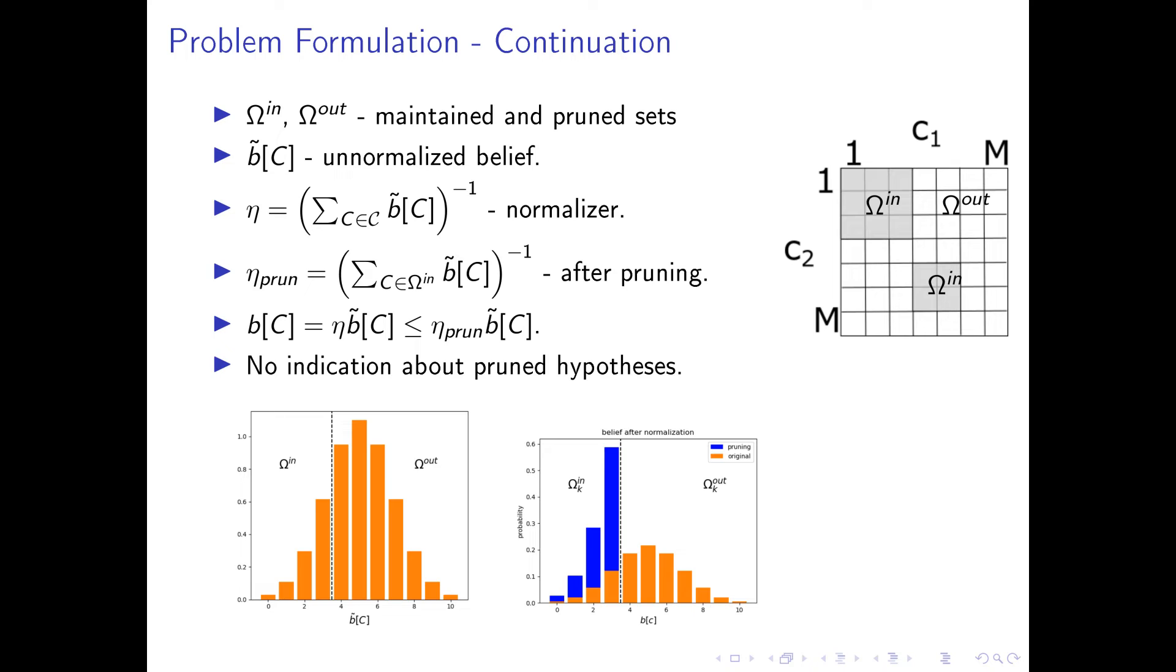This is problematic because the robot thinks that it has more confidence in its probability, which is falsely assumed. Additionally, we do not have any indication about the pruned hypotheses because we give them zero probability.